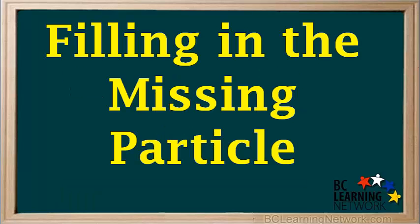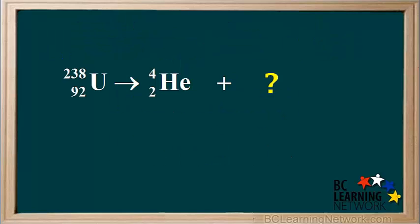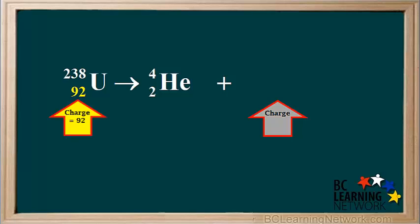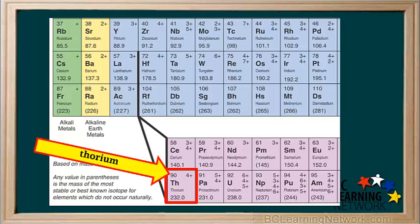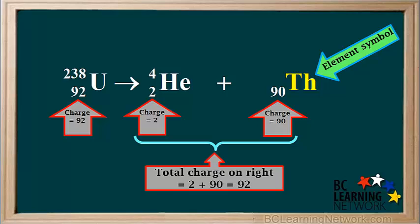Sometimes we're asked to supply a missing particle in an alpha decay equation. This is easy if we use the laws of conservation of charge and mass. Here we see that uranium-238 undergoes alpha decay, and we're asked to supply the nuclear notation for the missing particle. We can start by finding the charge on the particle. The total charge on the left side is 92, so the total charge on the right side must also equal 92. The charge on an alpha particle is 2, so the charge on the other particle must be 90, because 2 plus 90 equals 92. Looking at the periodic table, element number 90 is thorium with the symbol Th.